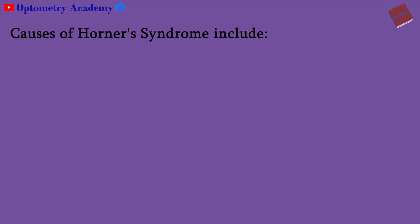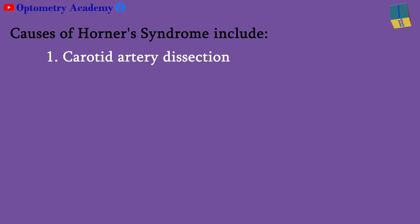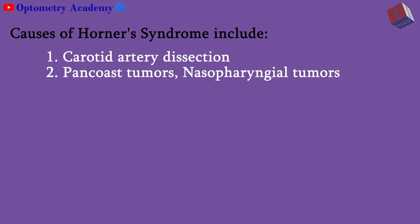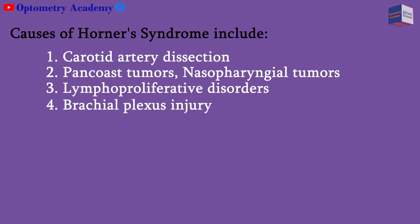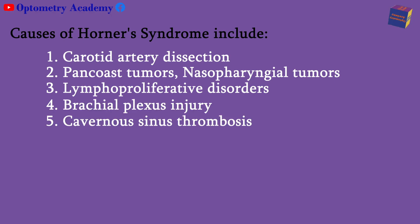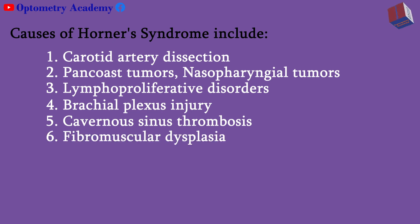Causes of Horner syndrome include: carotid artery dissection, Pancoast tumor, nasopharyngeal tumors, lymphoproliferative disorders, brachial plexus injury, cavernous sinus thrombosis, and fibromuscular dysplasia.